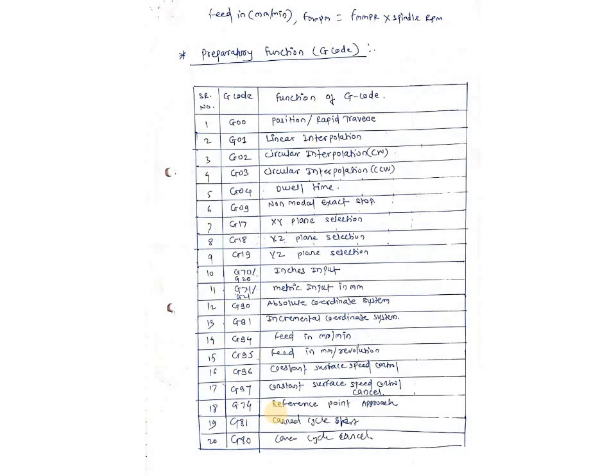G17, G18, and G19 are three G codes for three different planes. If you want to select any plane — suppose you want to select the XY plane, so you have to write G17. For XZ plane, G18. And for YZ plane, G19. This is about selection of the plane — G17 to G19 are used for plane selection only.